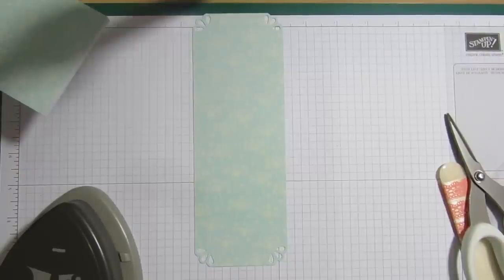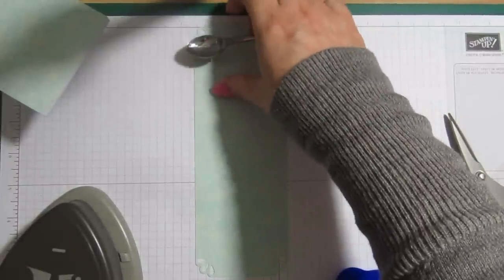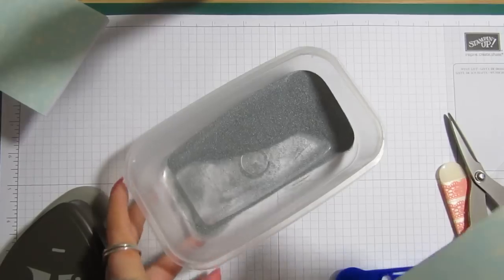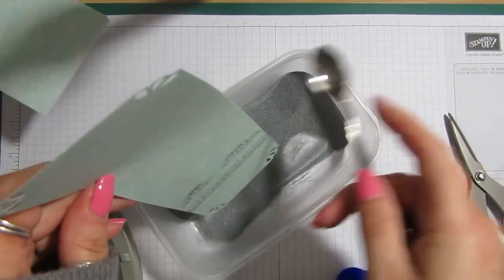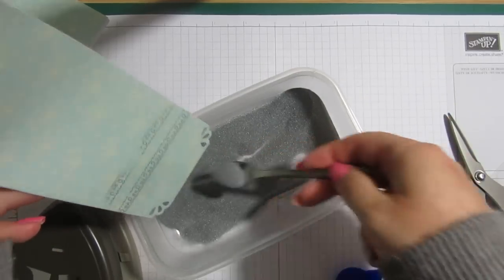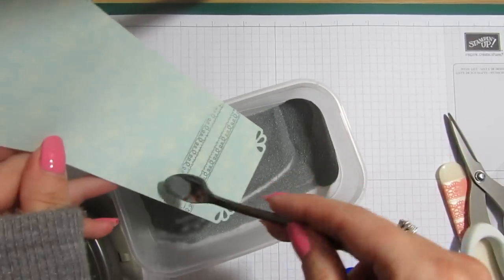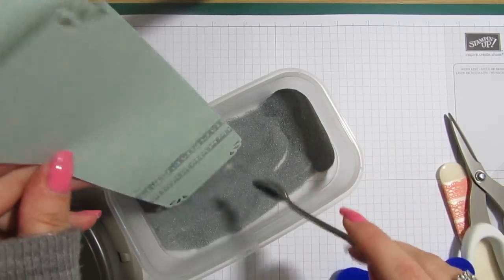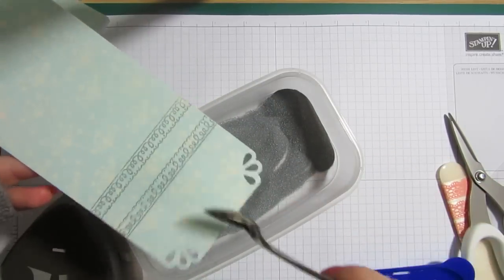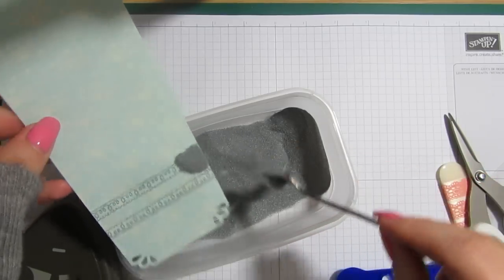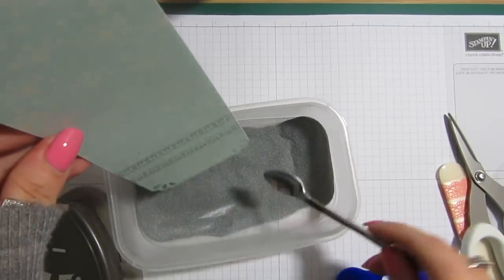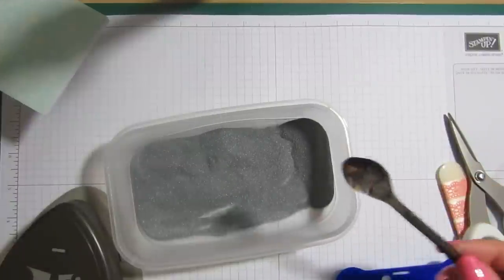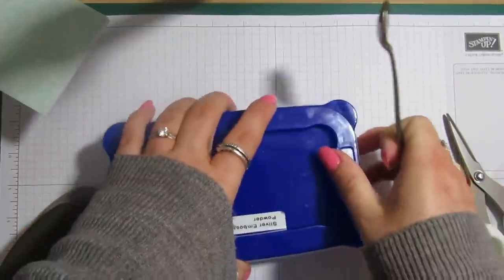And I've got some silver embossing powder. If I can get a hold of the paper. And I'm just going to heat emboss. Now, doesn't that look so pretty? And obviously, it will look even better once it's heat set. I missed a little bit there. There we go. So, I'm just going to get the heat tool.